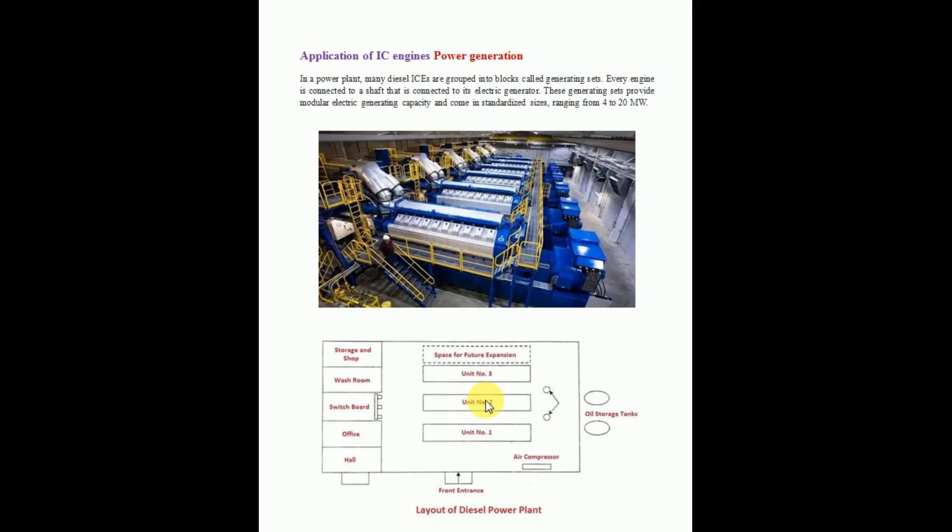First, I'll take the application of internal combustion engines in power generation. Power generation means here the internal combustion engine is used to provide shaft power to run an electrical generator. Multi-cylinder diesel engines are used to provide shaft power to the generator, and those are called diesel generator sets.